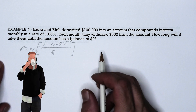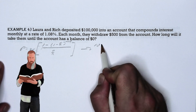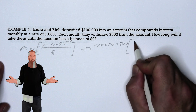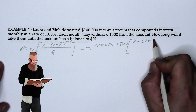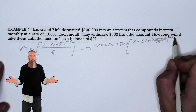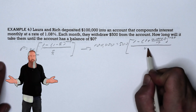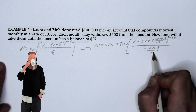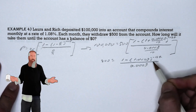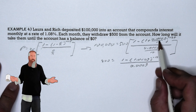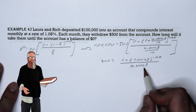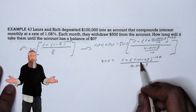We have already seen the equation for this, so what we need to do is substitute those values, giving us: 100,000 is equal to 500 times 1 minus the sum of 1 and 0.0108 divided by 12, all to the negative 12t power, all divided by 0.0108 divided by 12. A hundred thousand divided by 500 gives us 200. It's important to notice that 0.0108 divided by 12 is 0.0009.